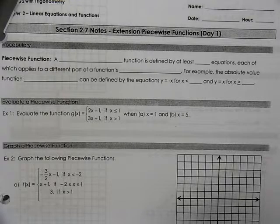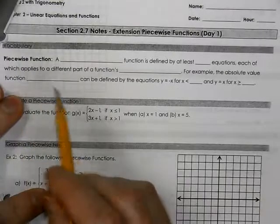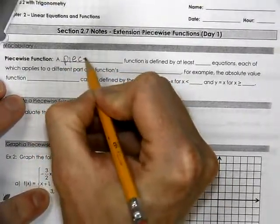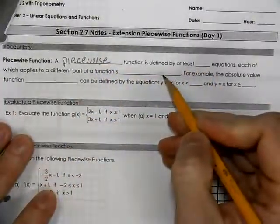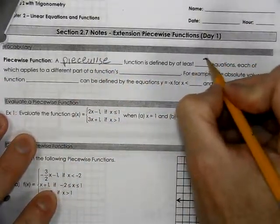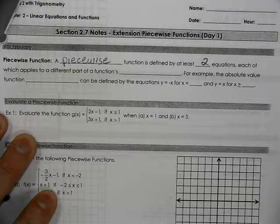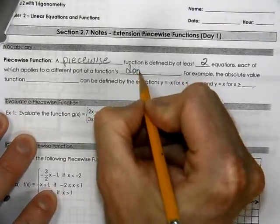For Algebra 2 with Trig, this is our piecewise function, day one. A piecewise function is defined by at least two equations, each of which applies to a different part of the function's domain.